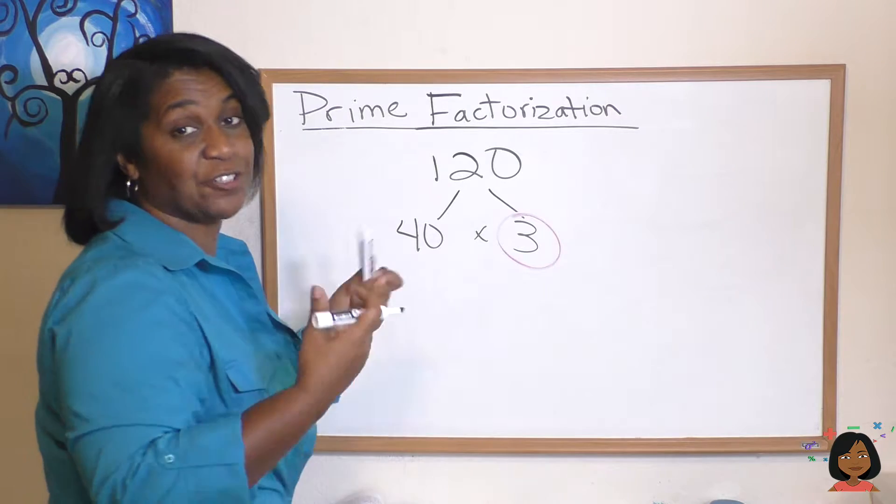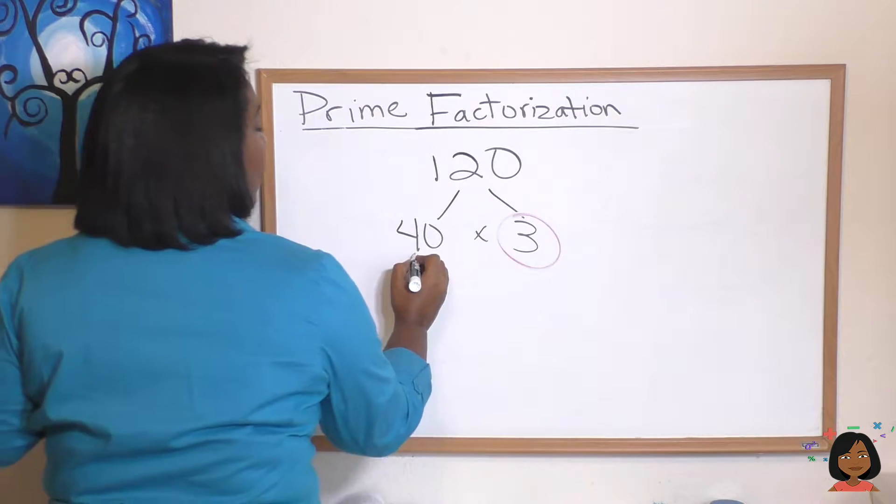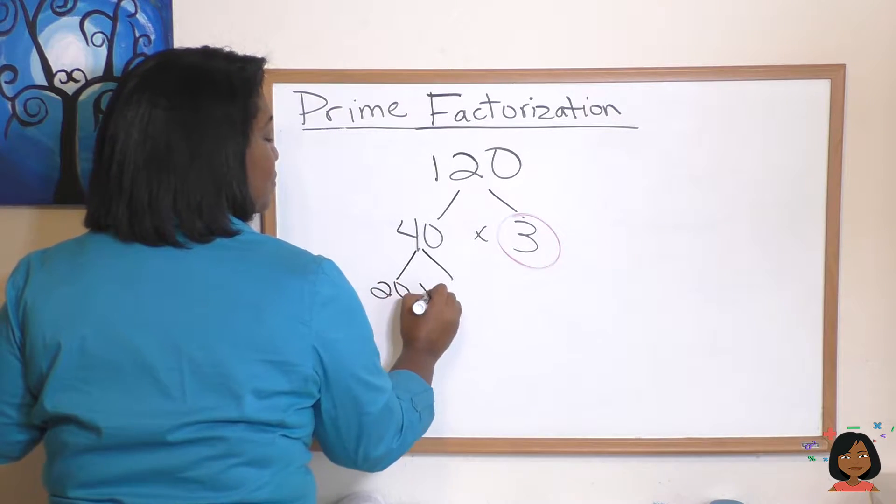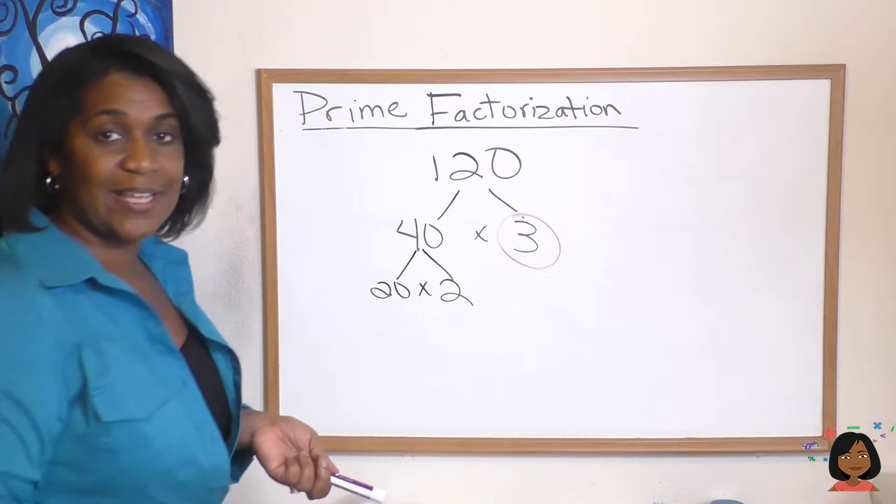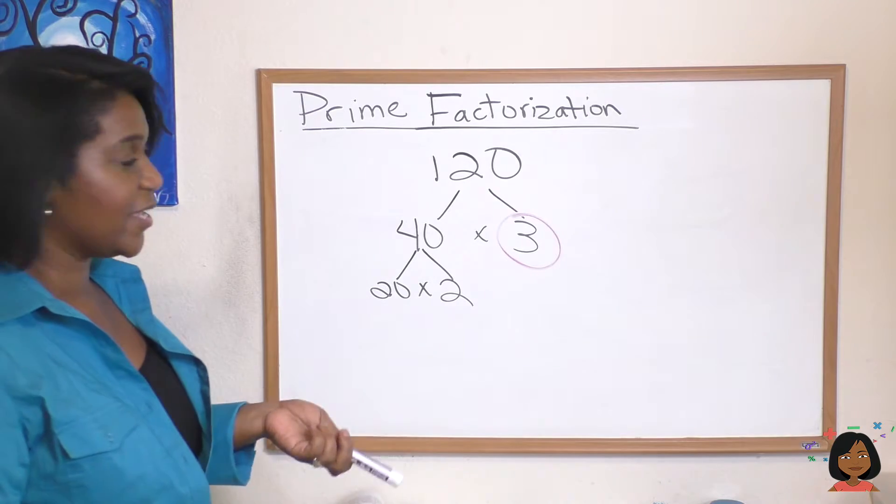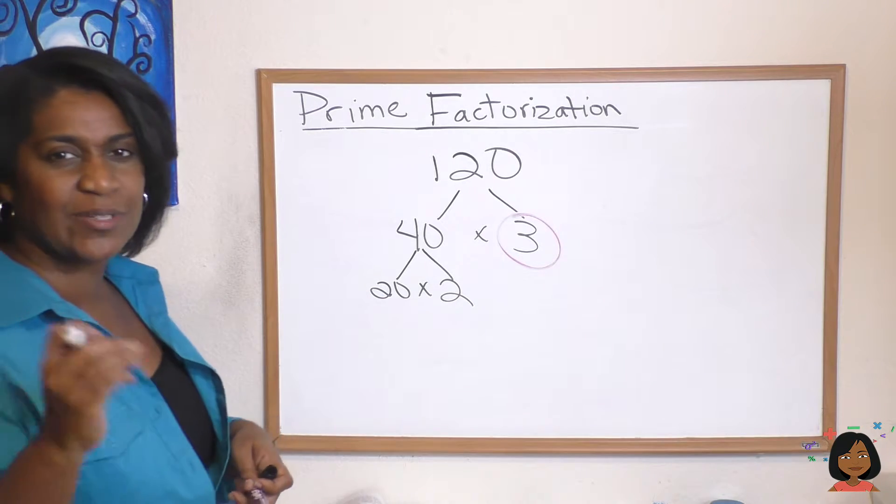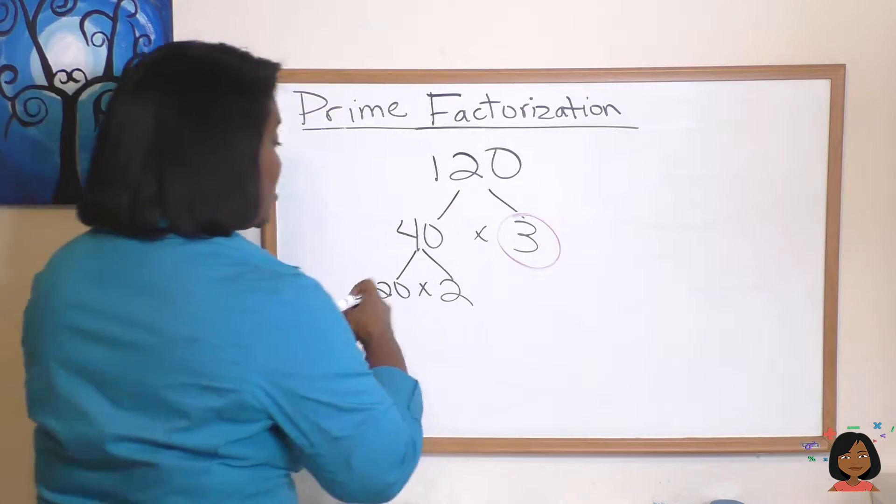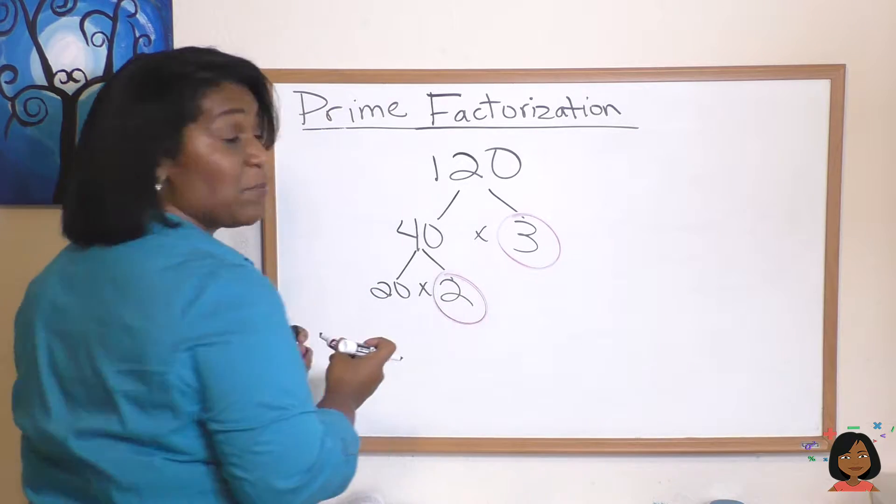And now I'm going to factor again my 40. I'm going to do 20 times 2. And I look and I see are these numbers prime? Well 20 is not because we know it's even and there's some factors there. But 2 is prime. It's the only even number that is prime. So we're done with the 2. We're going to keep going on the 20.